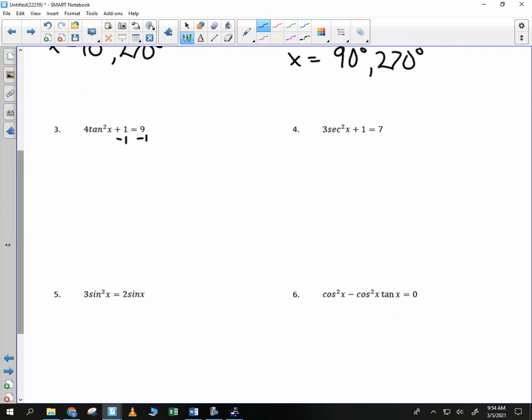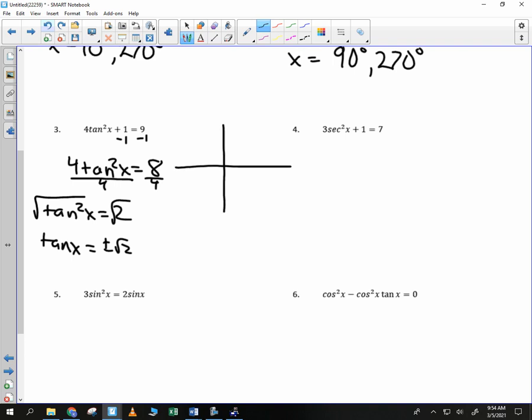Try this one. We subtract 1 from both sides. We have 4 tangent squared of x is equal to 8. Now what? I divide by 4, we get tangent squared of x is equal to 2. I square root both sides. I get tangent of x is equal to plus or minus the root of 2. That's not a value of 0 or 1, so I don't have to worry too much. But can somebody tell me, where is tangent positive? Do you remember? All students take calculus. 1 and 3. So therefore, it's negative in the second and fourth quadrants. So we're going to have four solutions.